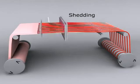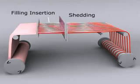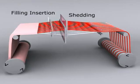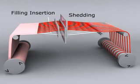The second motion needed is filling insertion. Through the open shed of warp yarns, the filling yarn is inserted so that it interlaces with the warp yarns to produce a particular weave design.